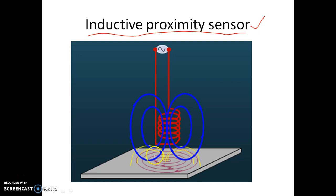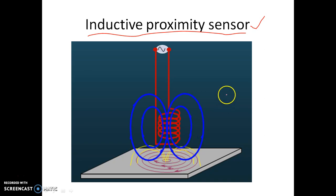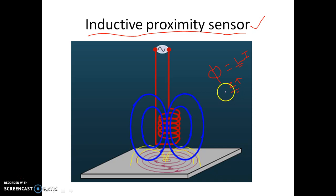The yellow-shaped electromagnetic field will oppose the blue-shaped electromagnetic field because of Lenz's law — it will oppose the source. As a result, the overall electromagnetic field of the system will decrease. And as we know, phi equals L times I; as phi decreases, I also decreases because L is constant. As I decreases, the impedance of the system increases — when current decreases, impedance increases.